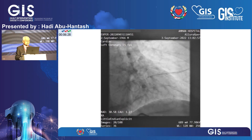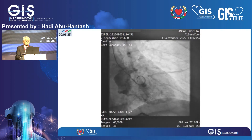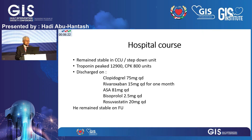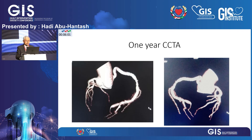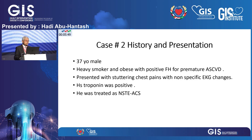I performed an LV gram and the ventricle was actually hyperdynamic. In hospital, he remained stable; troponin peaked at 12,900 and CPK at 800. He was discharged on clopidogrel, rivaroxaban, aspirin, bisoprolol, and a statin. The use of rivaroxaban is up for debate. One year later, I did a CCTA coronary angiogram, and the result of the angioplasty was sustained — a really good outcome.